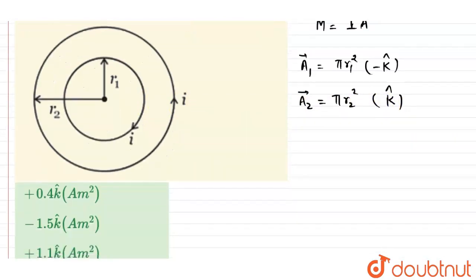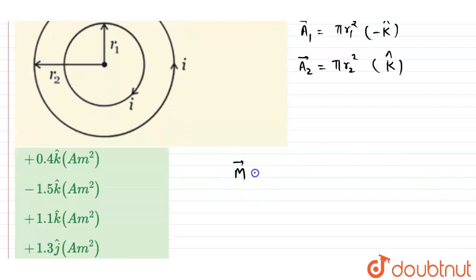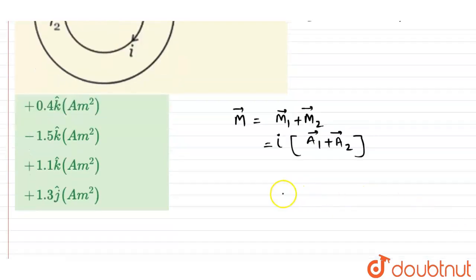This is the area vector A1 and A2. Now the total magnetic moment due to these two loops should be m1 plus m2. Now try to find out m1 and m2. Here the i will be common and the areas are A1 or A2.